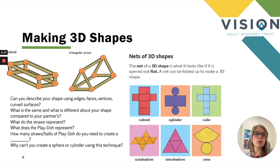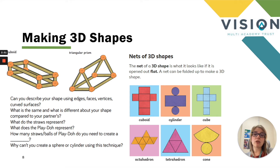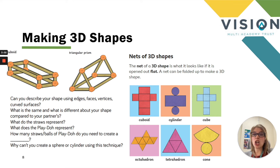Now we're going to be moving on to making 3D shapes, and there are two different ways of doing this. The first is by joining sticks together — for example, cocktail sticks, straws or lollipop sticks. As we go, we describe the shape using edges, faces, vertices and any curved surfaces, for example a cylinder, a cone or a sphere. We also talk about what's the same and what's different, and what each object in that shape represents — what does the straw or stick represent, and what does the play-doh or blue tack represent?